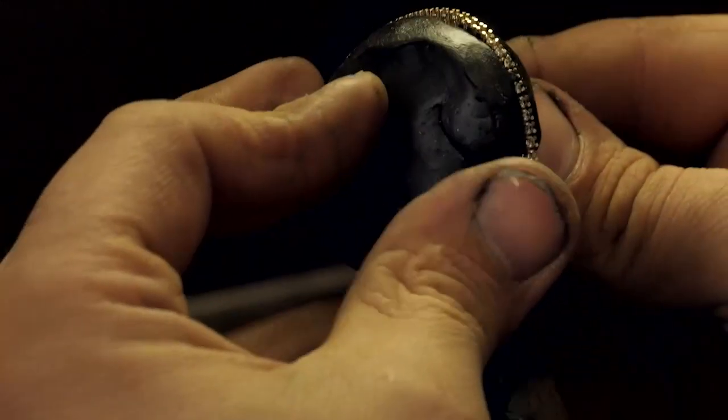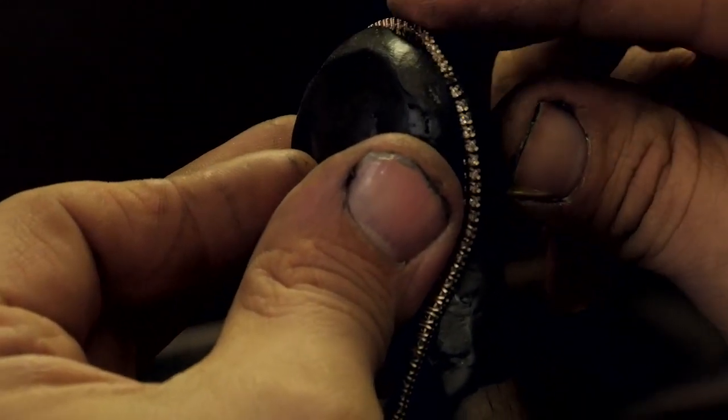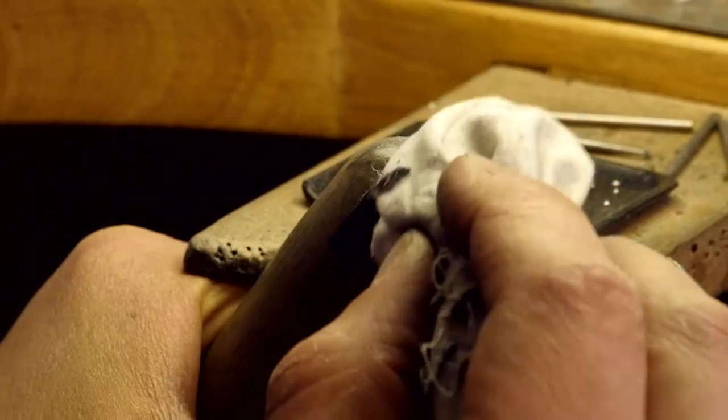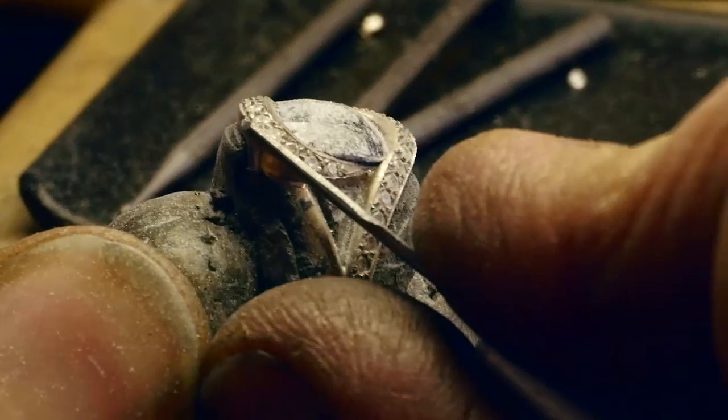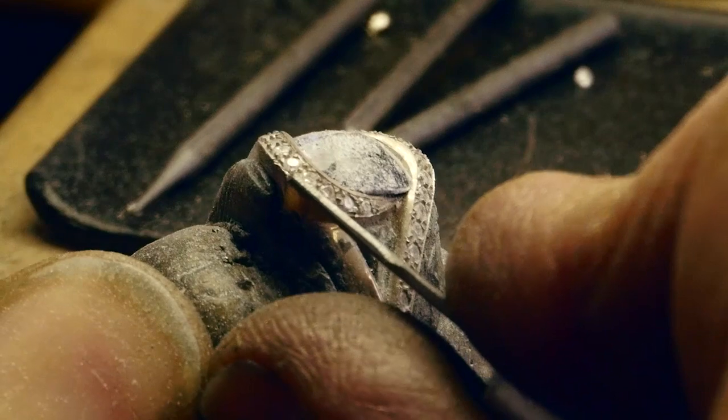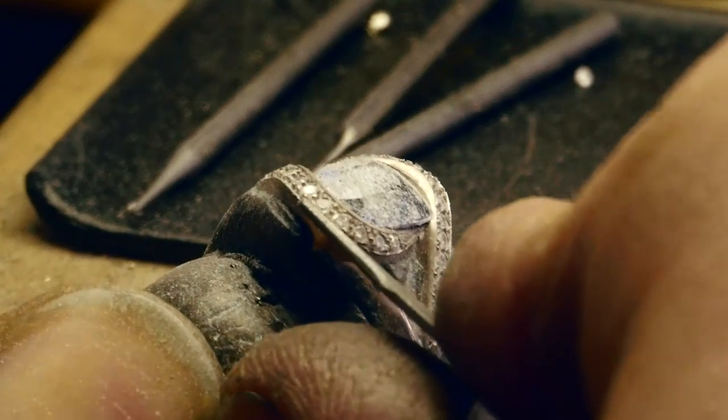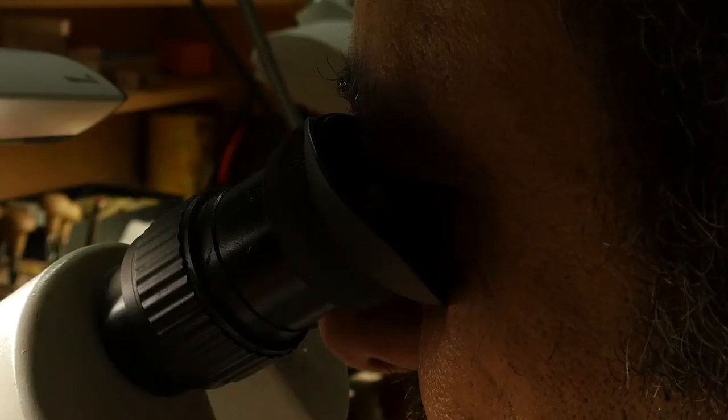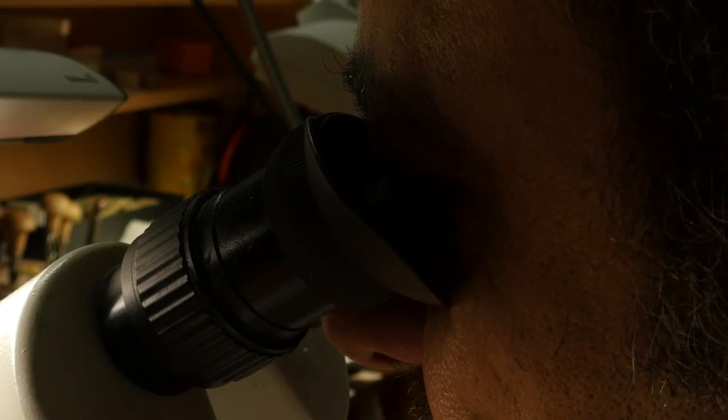Afin de le maintenir ou de le protéger, le bijou ou une partie du bijou peut être fixé dans la cire. Le sertisseur utilise du talc pour éteindre la luminosité des pierres et ainsi mieux voir le métal. La loupe binoculaire est utilisée pour les pierres de petite taille.